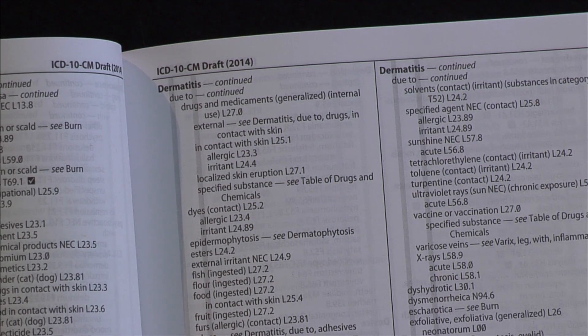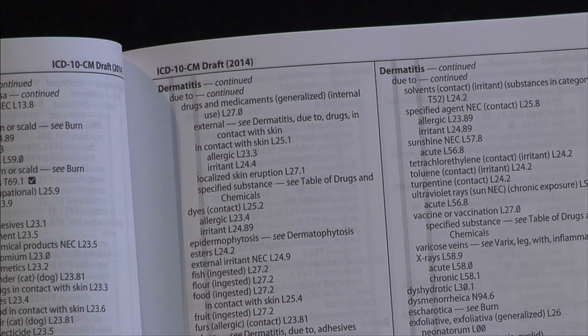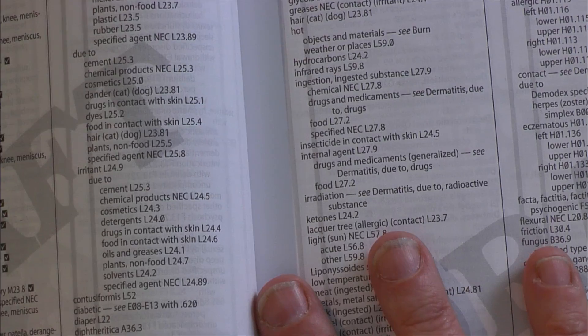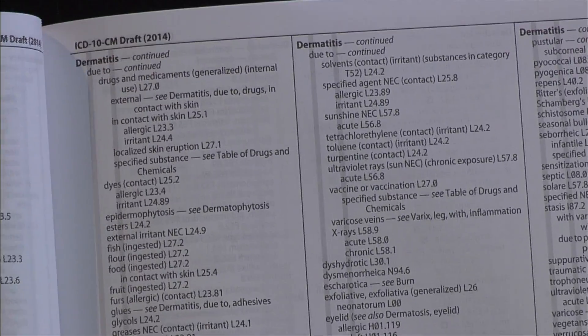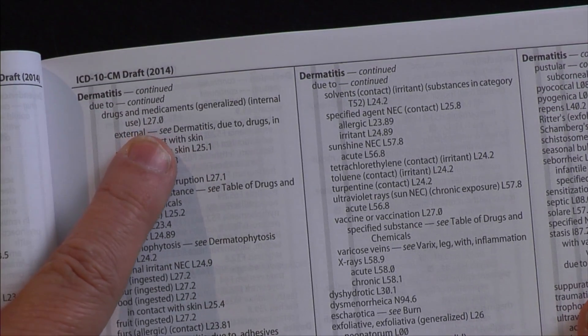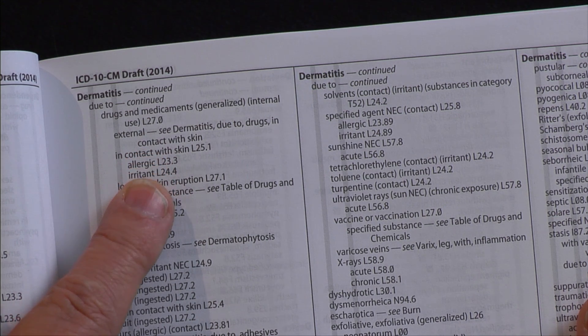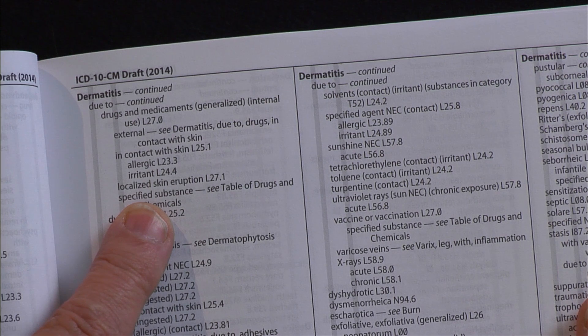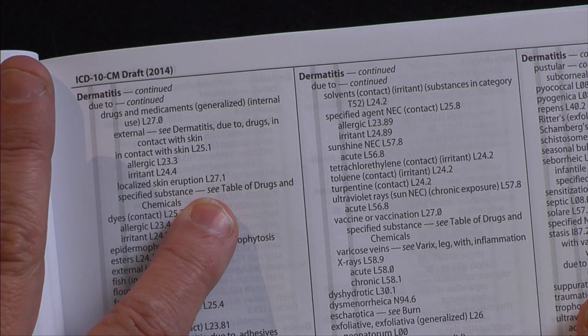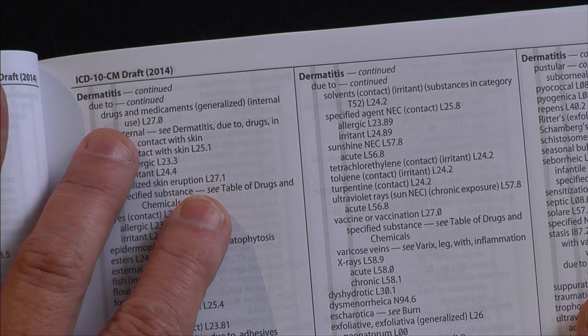I'm going to start by going to my alphabetical index and look up dermatitis. I found dermatitis and I'm going through and found a section labeled Due To. I go down that list looking for something related to drugs since that's what caused the dermatitis. I find a code for localized skin eruption, and that's what happened with the rash. It gives me a more specific code of L27.1, which is in the same general area of the first code I found. So I'm going to go to that section of the tabular list and verify my code.